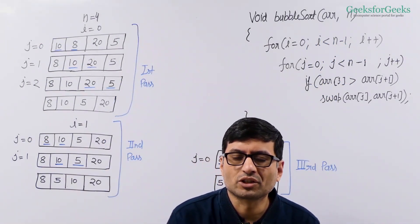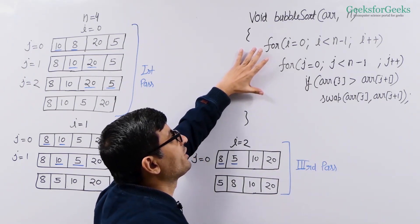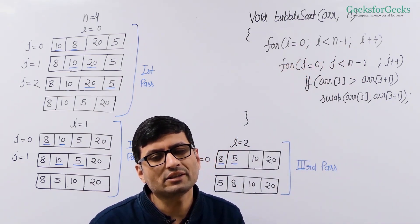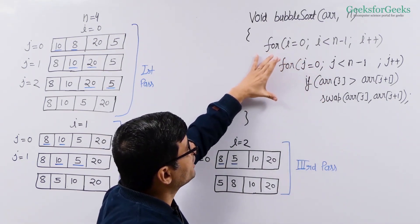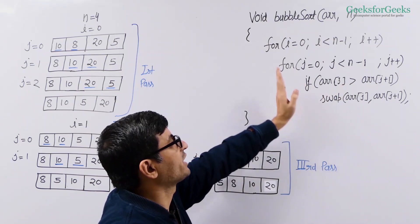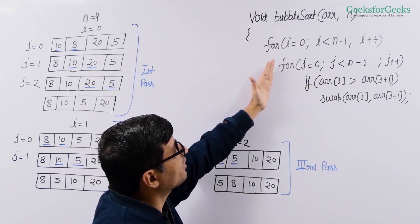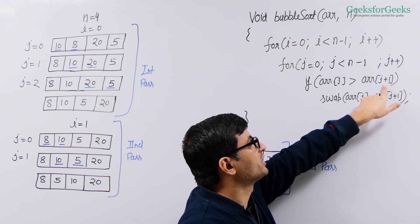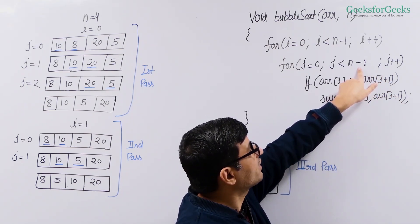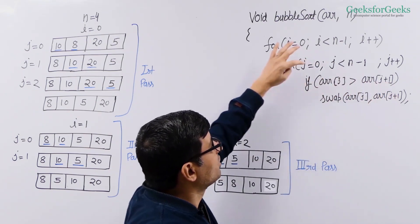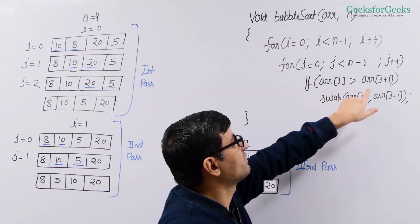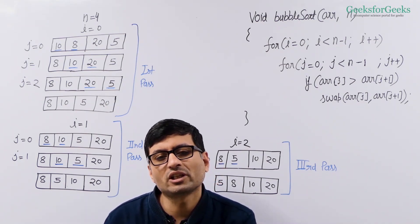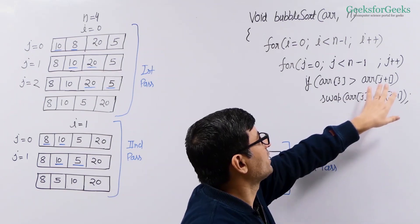Let us now talk about the implementation of bubble sort. We need to do n minus 1 passes, so we run an outer loop from 0 to n minus 2 to have n minus 1 passes of bubbling. This is the code to bubble the largest element to the last position first, then the second largest element to the second last position. We run a loop from j equal to 0 to n minus 2. Why n minus 2? Because we are going to compare array[j] with array[j+1]. If we use n minus 1 here, it will go out of index bounds. When j becomes n minus 2, we compare the n minus 2th element with the n minus 1th element, which is the last element. We compare array[j] and array[j+1], and if they are out of order, we simply swap them.